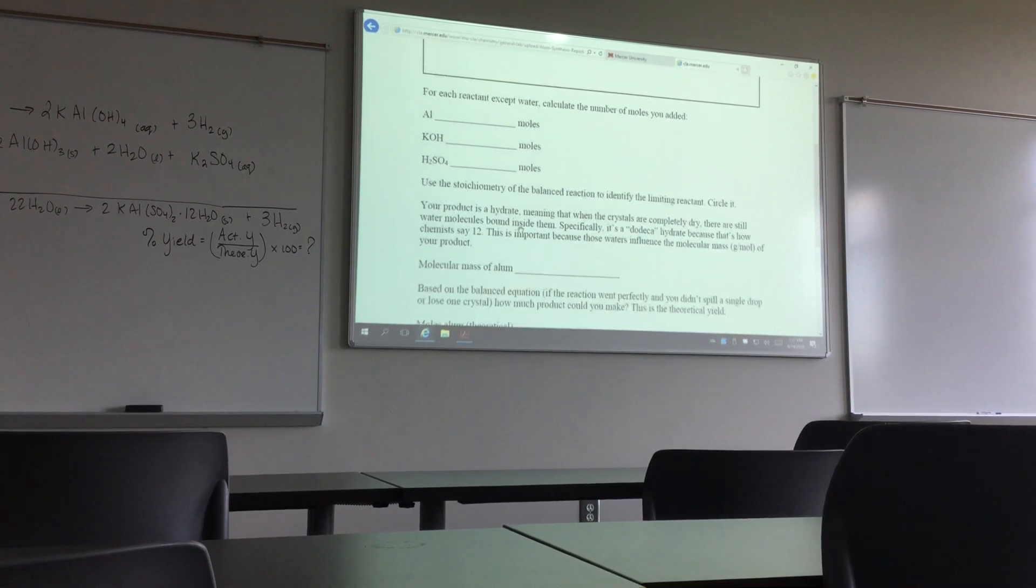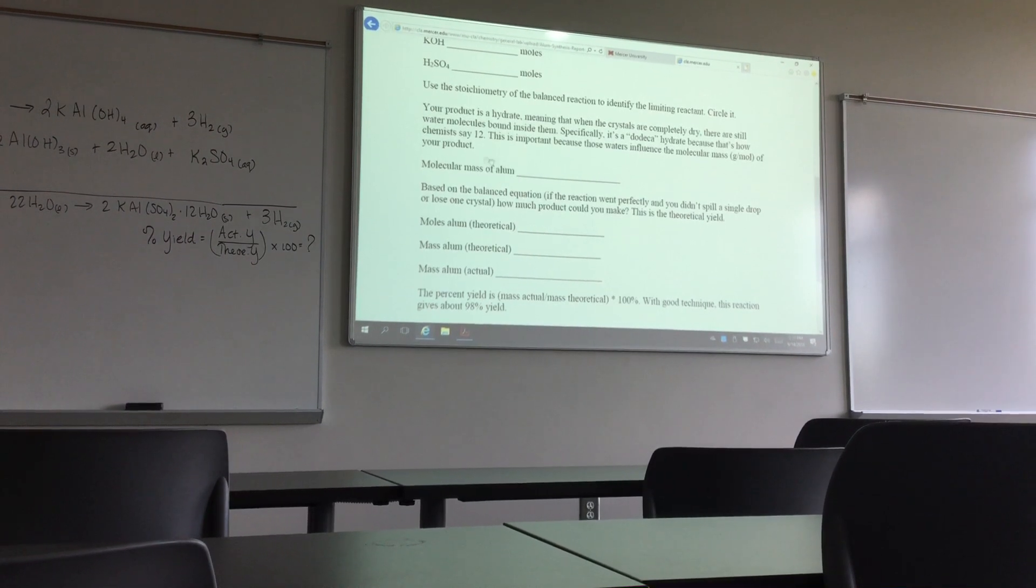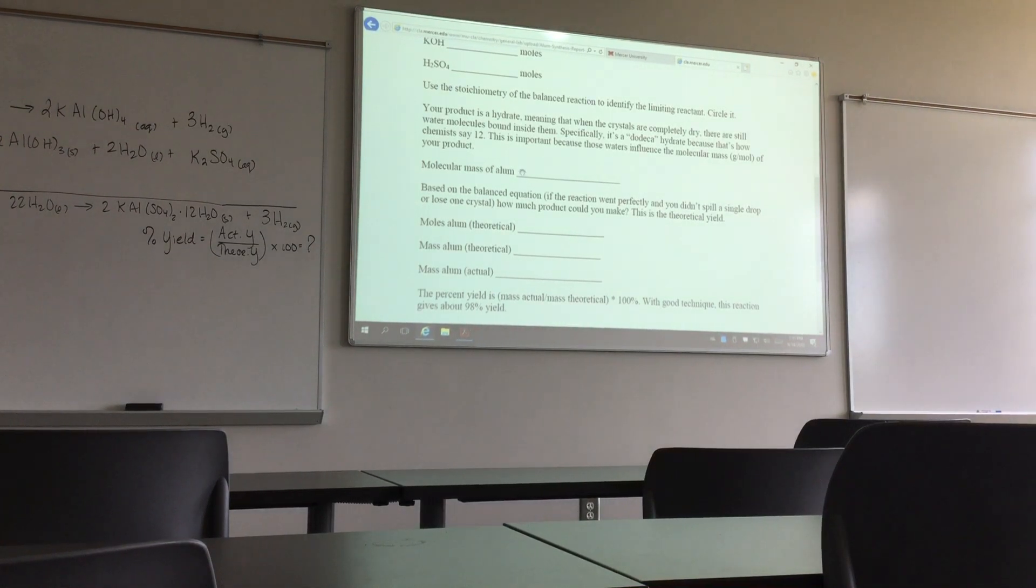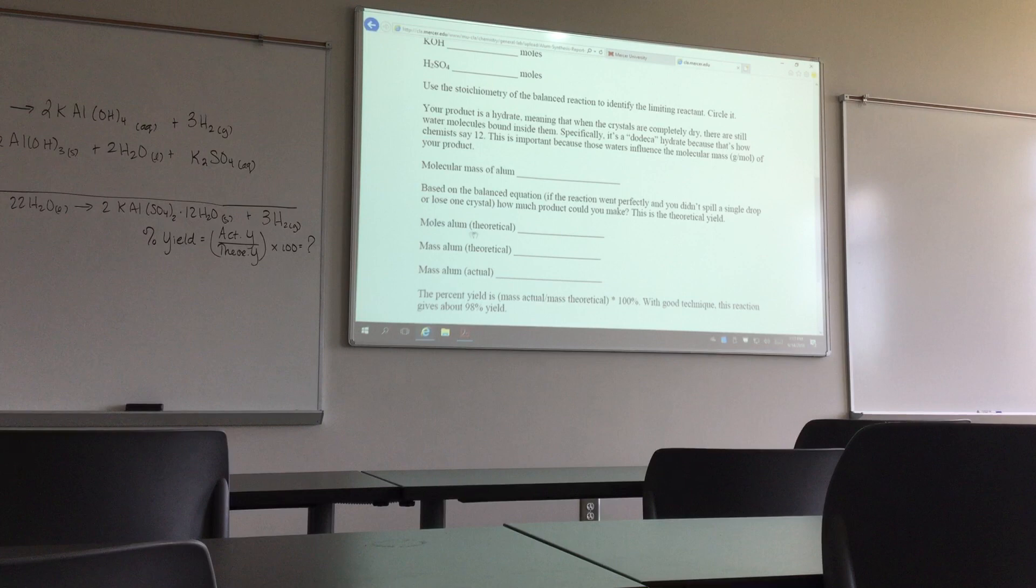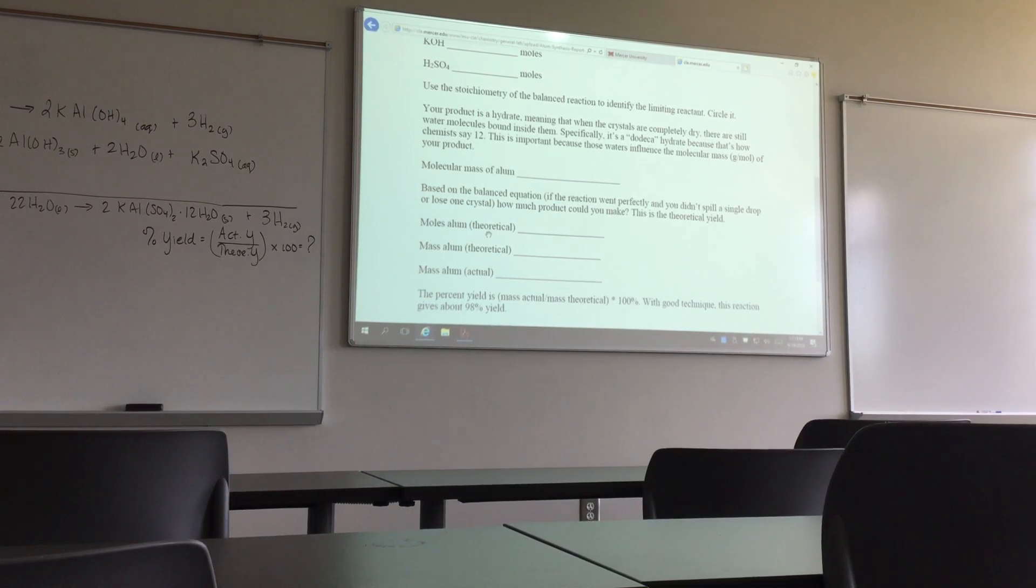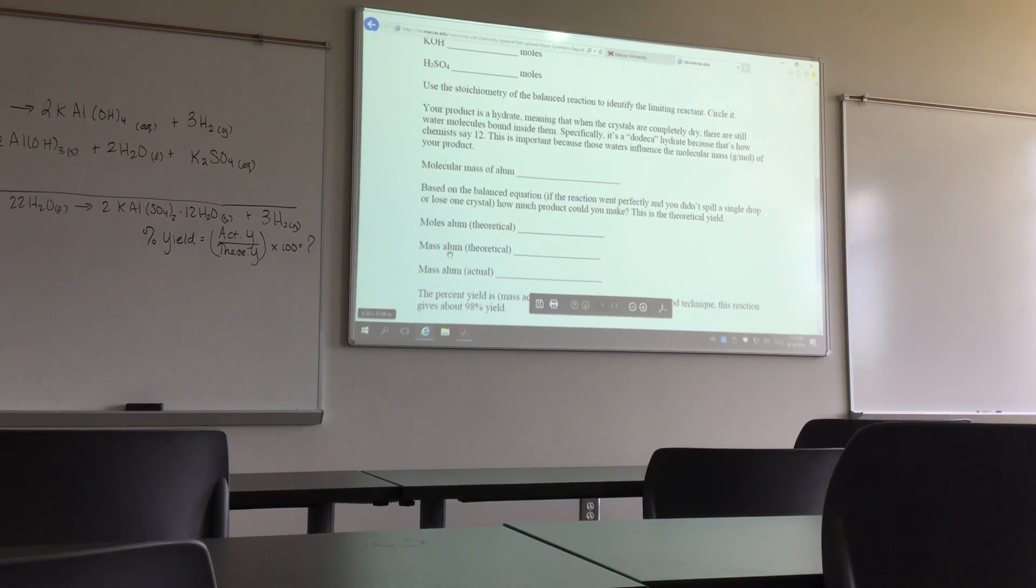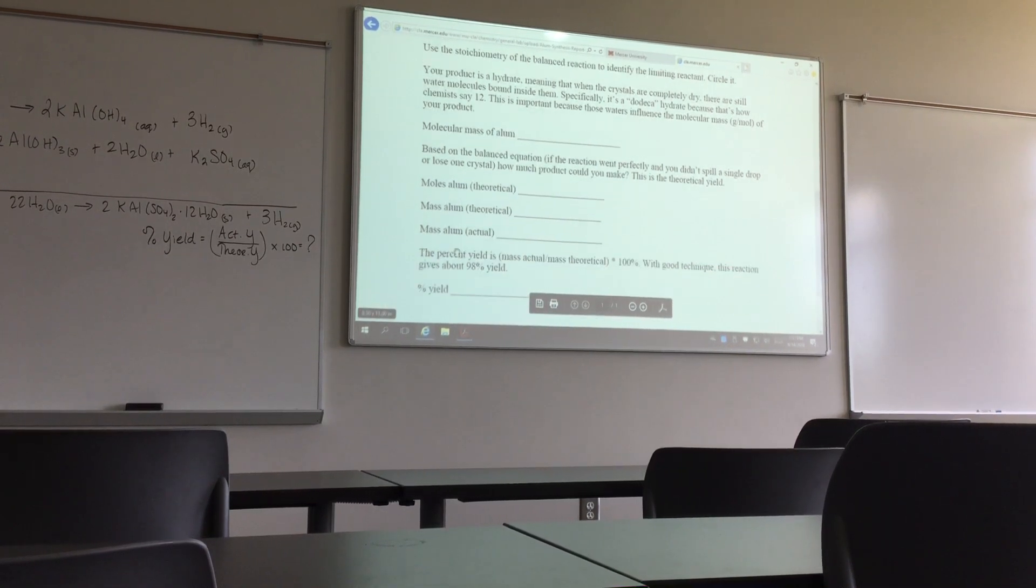At the bottom, the molecular mass of alum is the molar mass of the alum that you produced. Here you have the moles of alum theoretical. The theoretical is always based on the limiting reactant, so you have to find the limiting reactant before you can find the theoretical amount of moles. That's the maximum amount of alum that you can find.